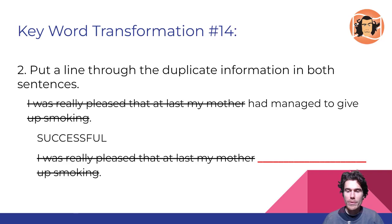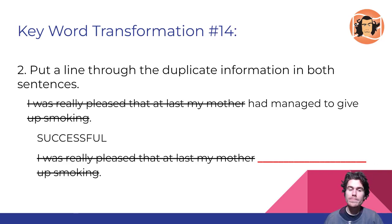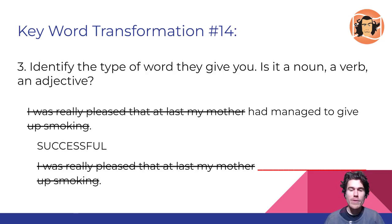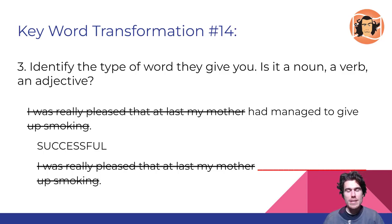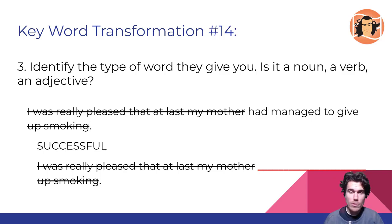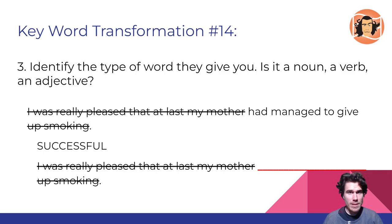That shows us we need to be focusing on 'had managed to give' and the keyword 'successful.' Step 3 is to identify the type of word they give us — the word 'successful.' Is it a noun, a verb, an adjective, or something else? Pause the video and write down what type of word you think it is.